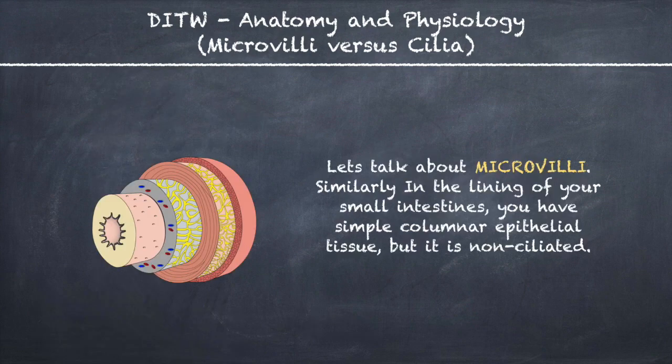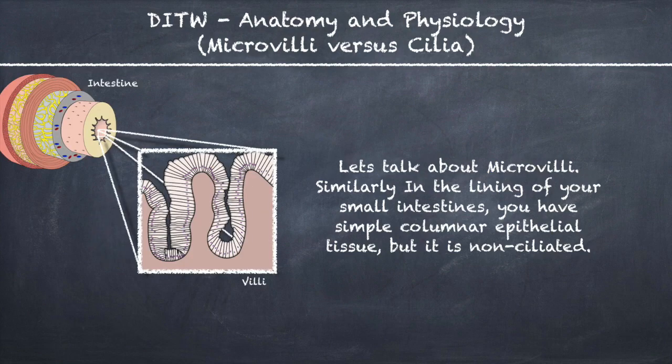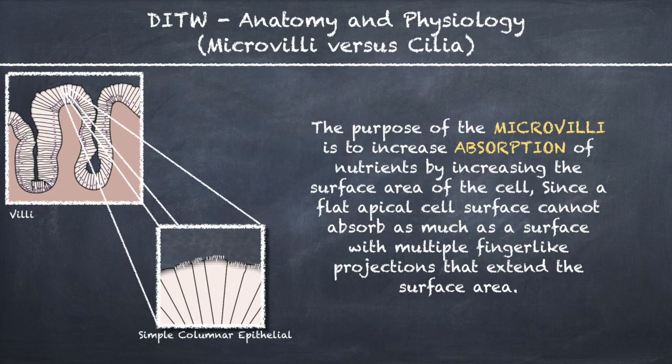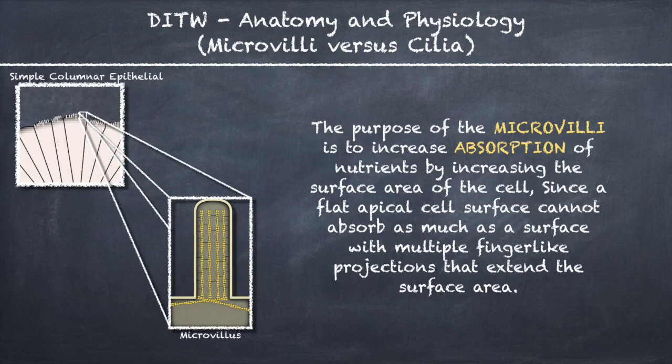Let's talk about microvilli. Similarly, in the lining of your small intestines, you have simple columnar epithelial tissue, but it is non-ciliated. The purpose of the microvilli is to increase absorption of nutrients by increasing the surface area of the cell, since a flat apical cell surface cannot absorb as much as a surface with multiple finger-like projections that extend the surface area.